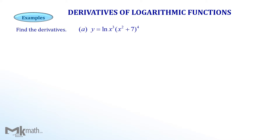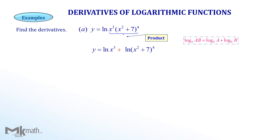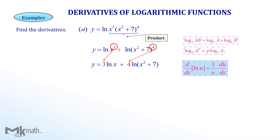Let's take a look at the first example. Find the derivative of natural log of x cubed times (x squared plus 7) raised to the power of 4. We can see the log of a product, so let's use the product property of logs. A log of a product can be changed into the sum of two logs, so we rewrite it using the property. We still see the exponent, so we apply the power property of logs — the exponent can be moved in front of the log. Now we can apply the derivative formula of natural log.